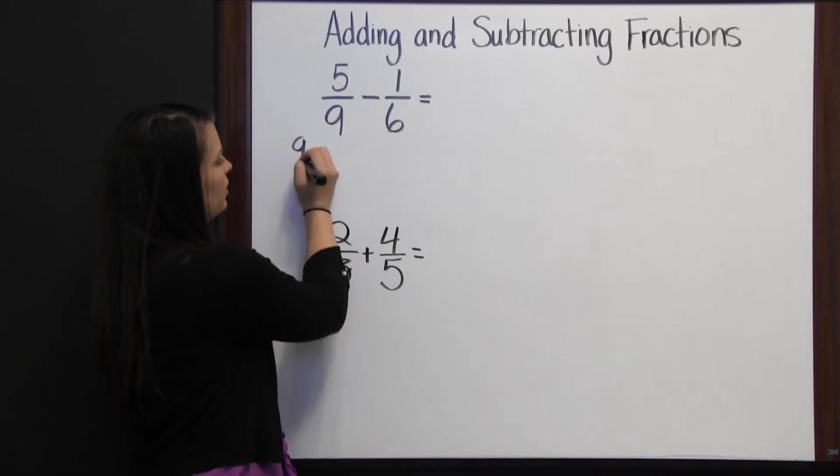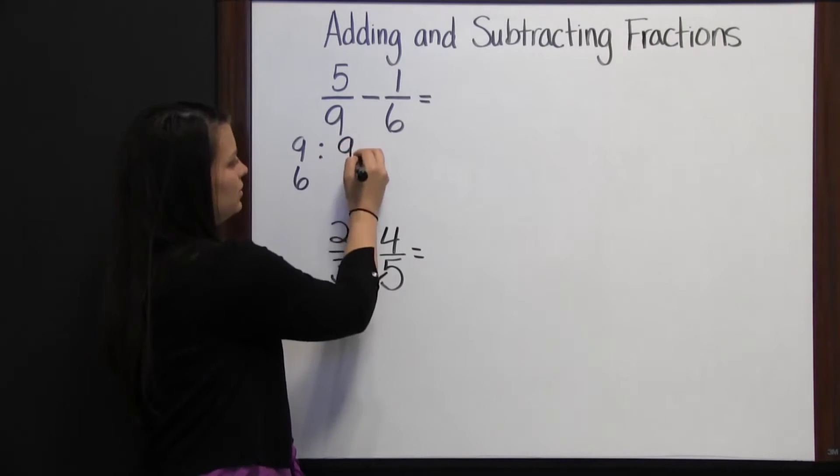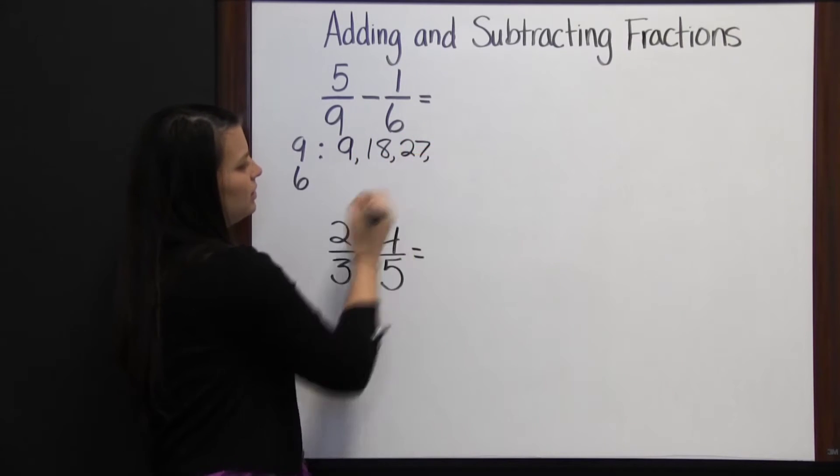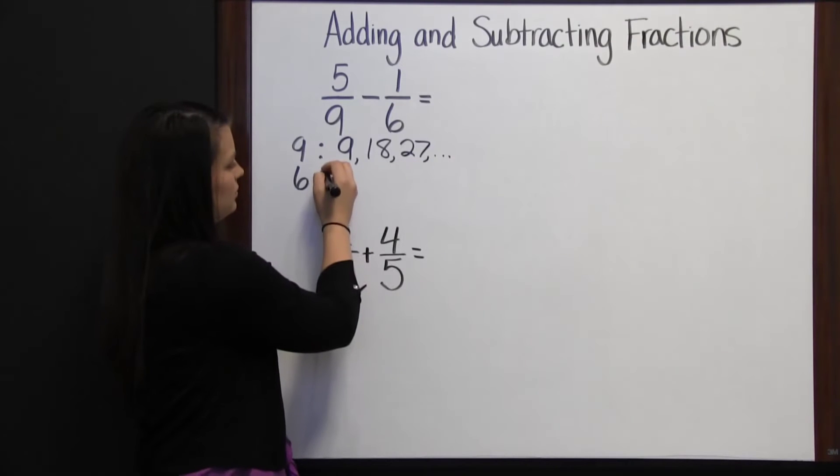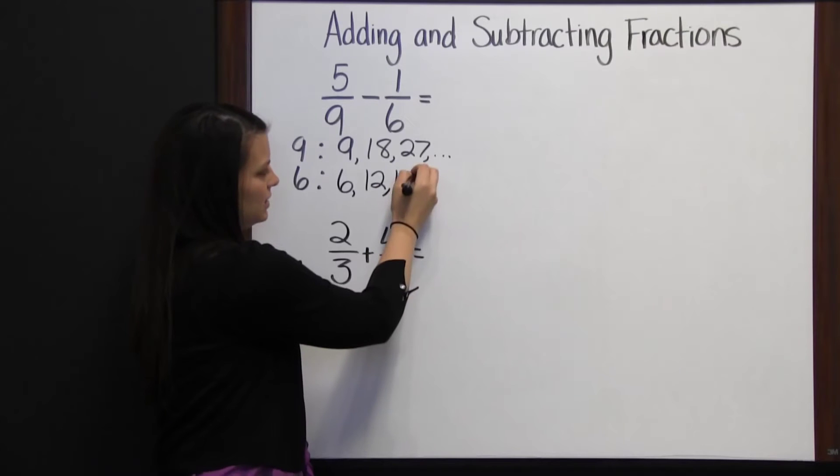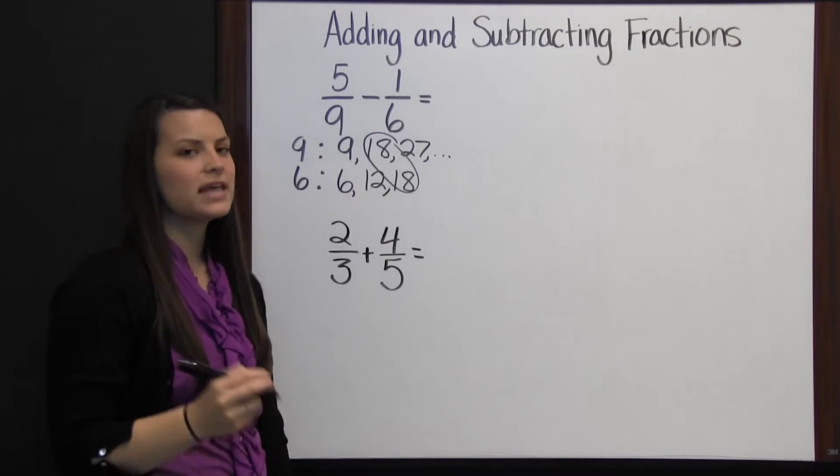The least common multiple of nine and six can be found by listing the multiples: nine, eighteen, twenty-seven, et cetera; six, twelve, eighteen. Our least common multiple is eighteen.